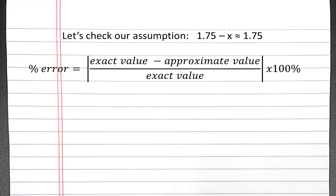Next we have to check that our assumption is valid. So we assume that 1.75 minus x is approximately equal to 1.75.